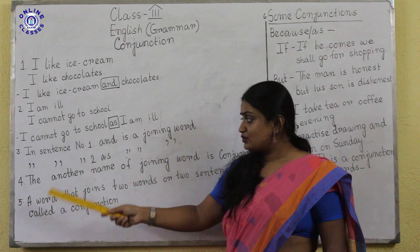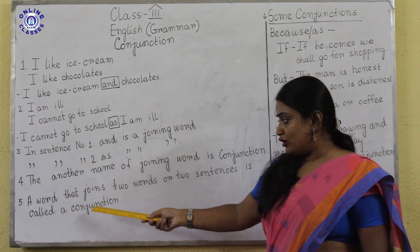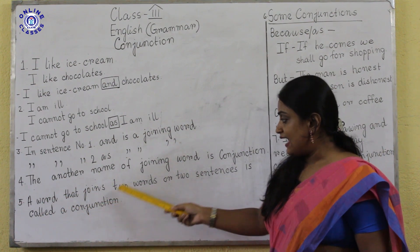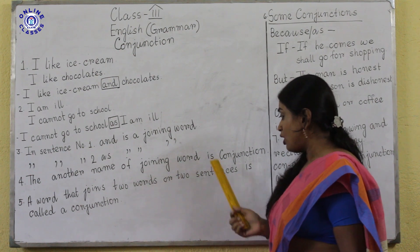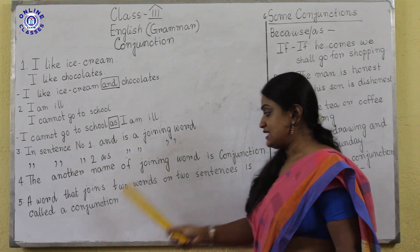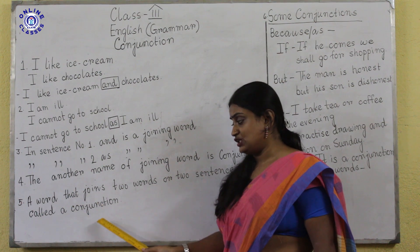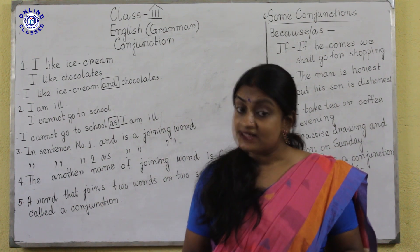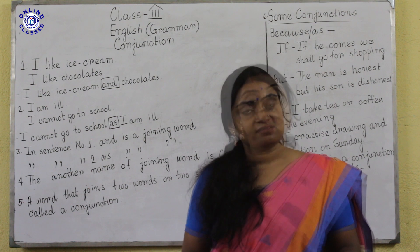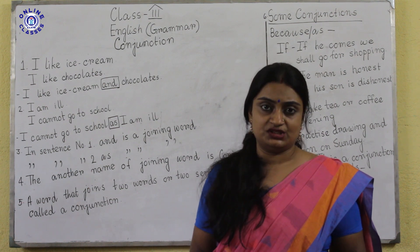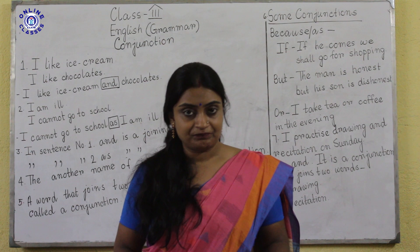To define, we can say a word that joins two words or two sentences is called a conjunction. Another name of conjunction is joining word.